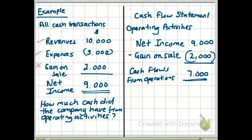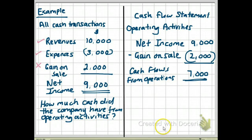Now if this were a loss on sale instead of a gain, we would add it back, because a loss on sale is also just a calculation — not a cash transaction. To summarize: when preparing the cash flow statement using the indirect method, start with net income; find depreciation on the income statement and add it back; if there are any gains, subtract them in operating activities; if there are any losses, add them back to operating activities.